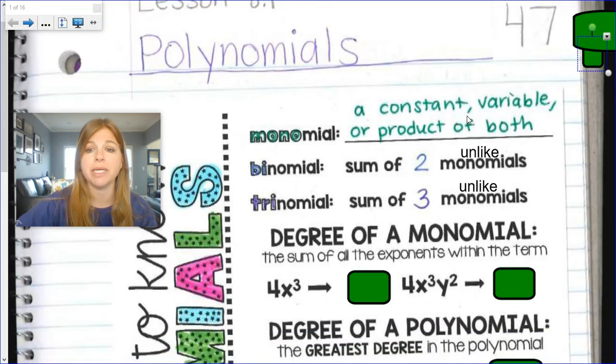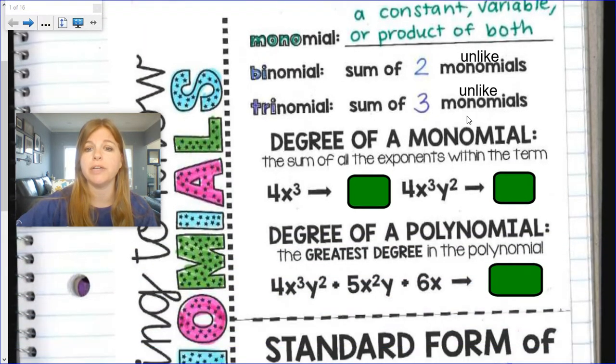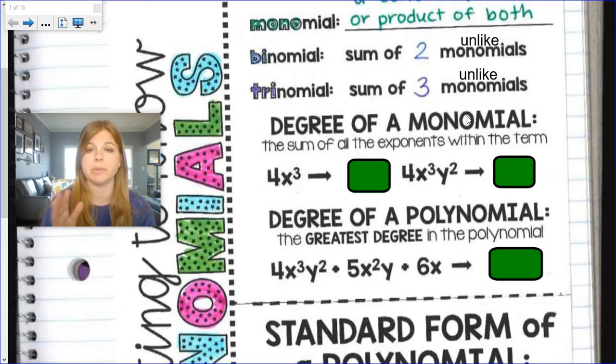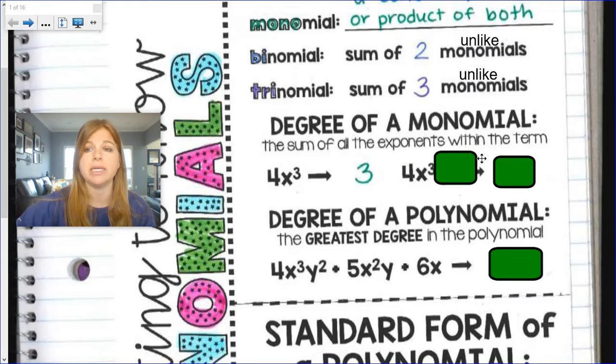Now the degree of a monomial. The degree of a monomial is the sum of the exponents within the term. So here if I have this one term, this monomial, 4x to the third, the degree is simply just 3 because that's the only exponent that I see.